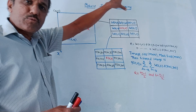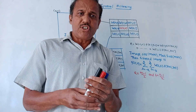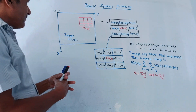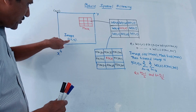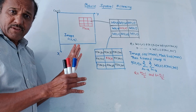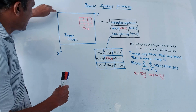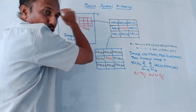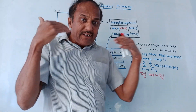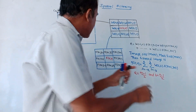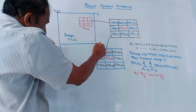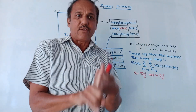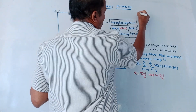From the exam point of view, if the question is how the basic filtering operation is performed, or explain basic filtering operation, then we need to explain all these things. We are considering one image; this image is denoted by f(x,y). This is the x-axis, this is the origin marked as (0,0), and this is the y-axis. To perform filtering, we have to design a mask.